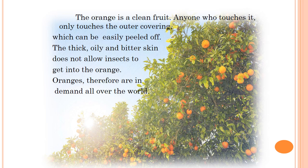The orange is a clean fruit — anyone who touches it only touches the outer covering which can be easily peeled off. The thick, oily, and bitter skin does not allow insects to get into the orange; therefore oranges are in demand all over the world. This skin helps the orange stay as it is and does not get affected by insects. When oranges are being transported or plucked, the skin does not affect the pulp. To peel off means to take the skin off fruits and vegetables. This way oranges can be transported easily throughout the world and hence are in demand everywhere.